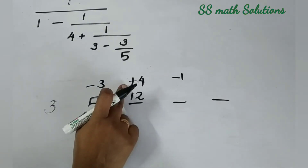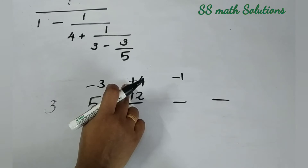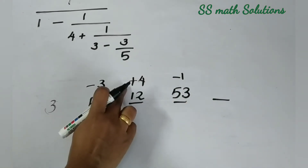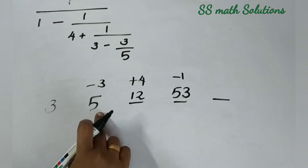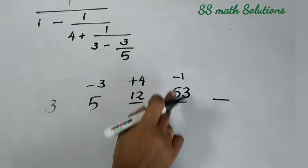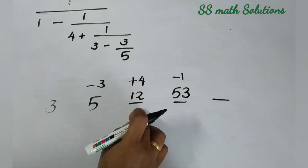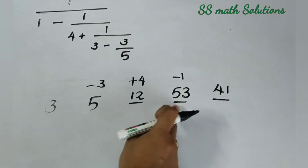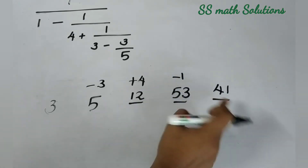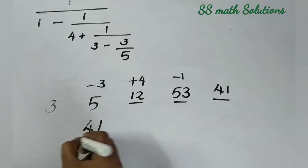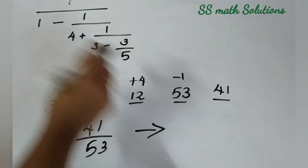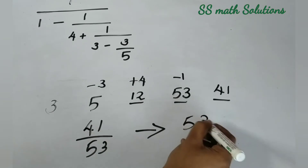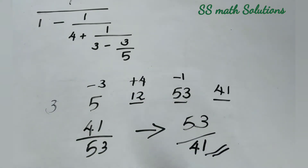Now 12 into 4 is 48. This is a plus sign, so 48 plus 5 is 53. Then 53 into 1 is 53, and 53 minus 12 is 41. So we got our answer: 41 by 53. But here '1 divided by' is there in the numerator, so we take the reciprocal. Our final answer is 53 divided by 41.